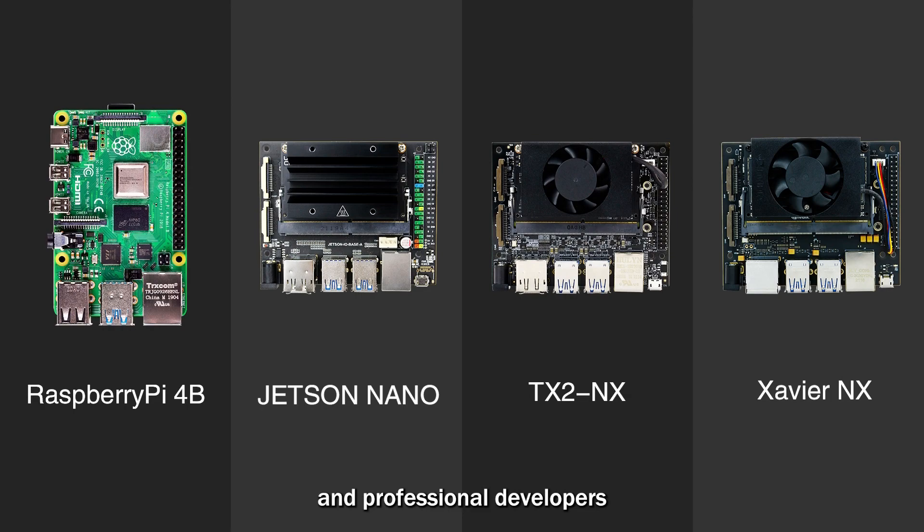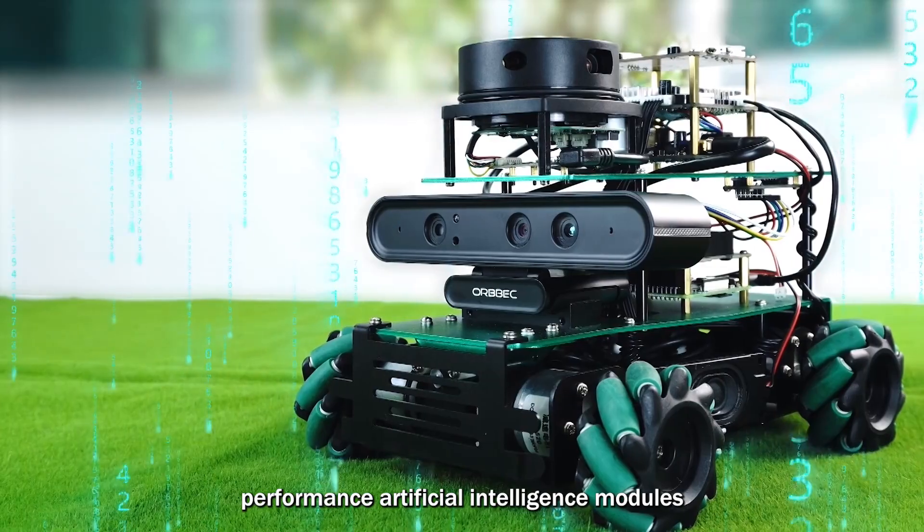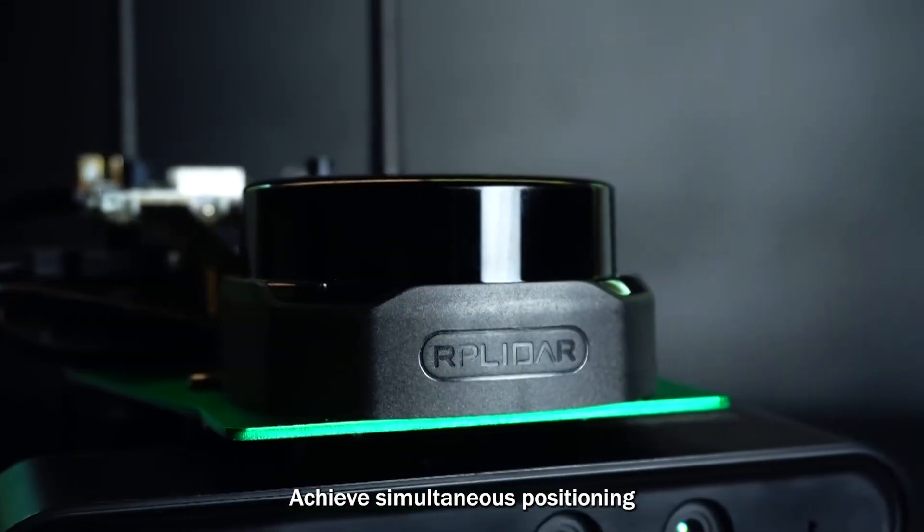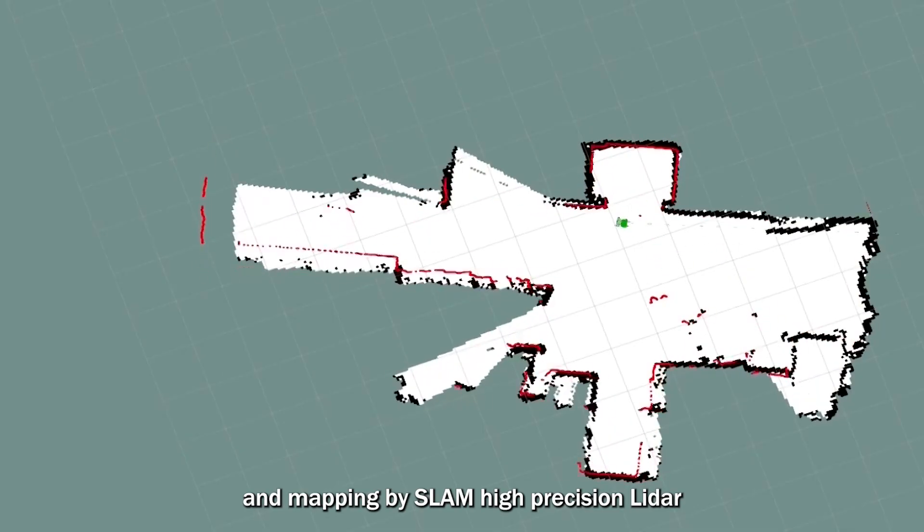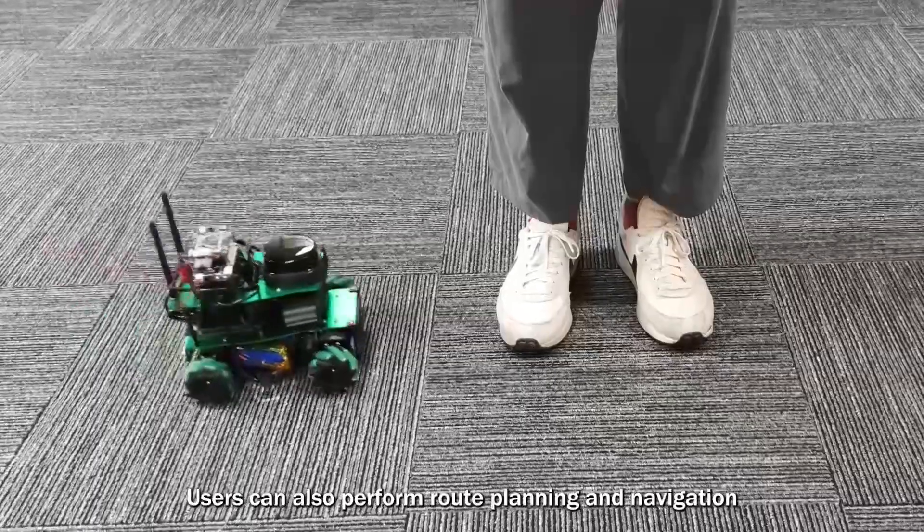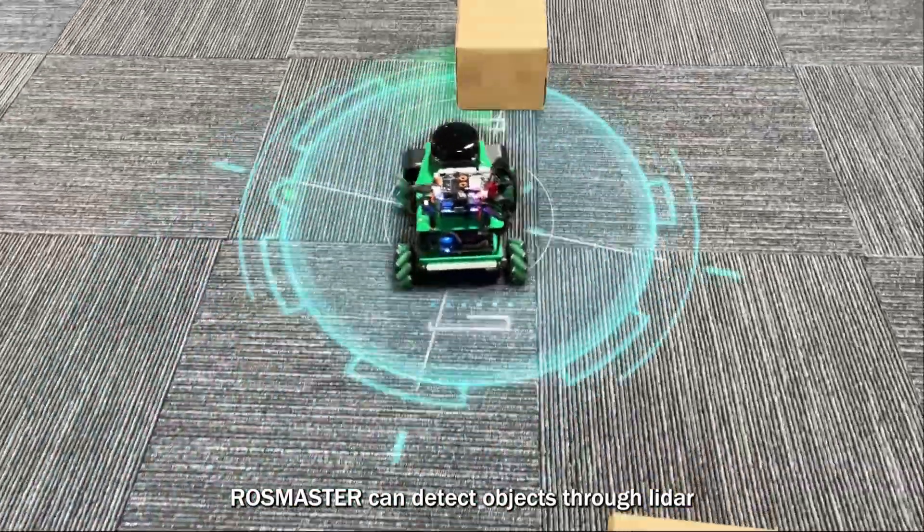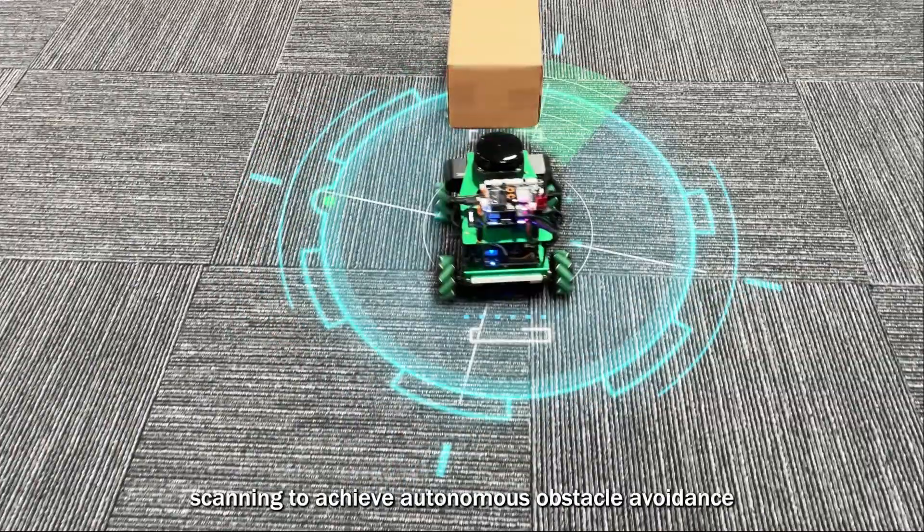Rosmaster is equipped with high-performance artificial intelligence modules to achieve simultaneous positioning and mapping by SLAM. High-precision lidar allows users to perform route planning and navigation.